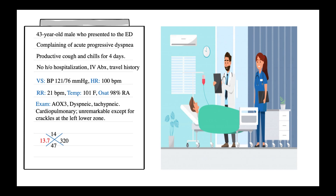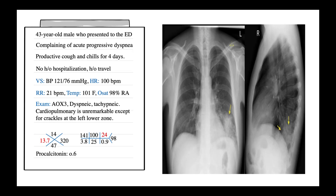Electrolytes and creatinine were normal, but the blood urea nitrogen was 24 milligrams per deciliter. Procalcitonin was obtained as well, and it was 0.6. We then reviewed the chest X-ray obtained in the emergency department, which showed a left lower lobe infiltrate on PA and lateral view.